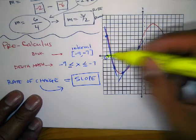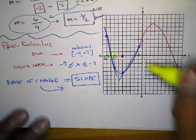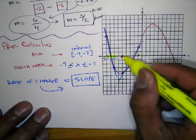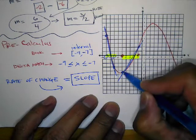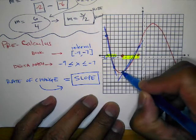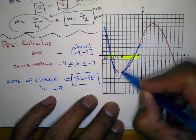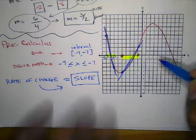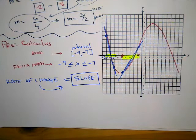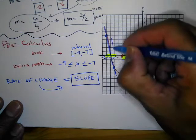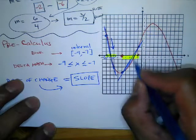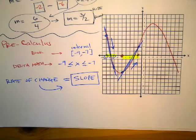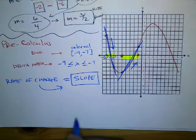That's why you can have different rates of change — it depends on the interval you're looking at. If I look between x equals negative 9 and negative 7, I get one line. If I look between negative 5 and negative 1, that's a different line with a different slope. The first one was going down — negative slope — and this second one is going up — positive slope.